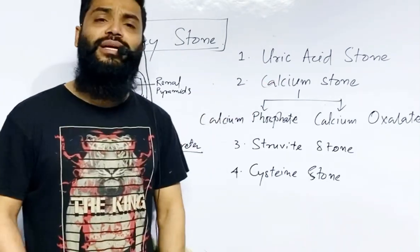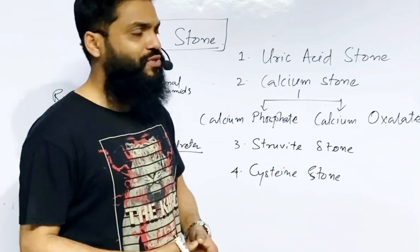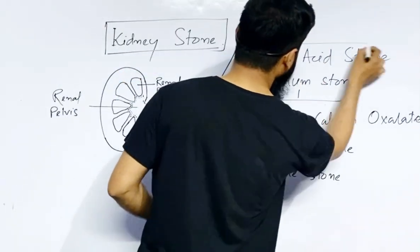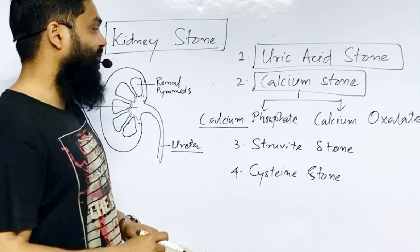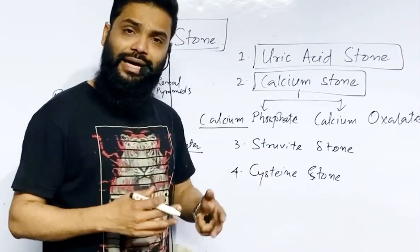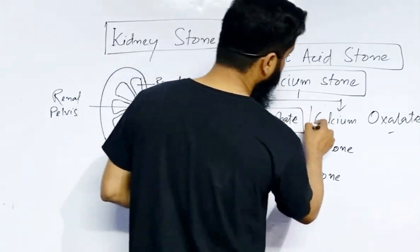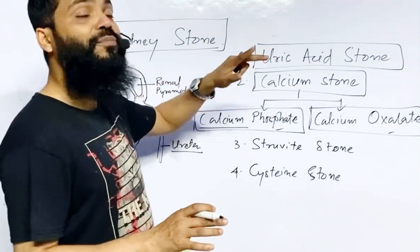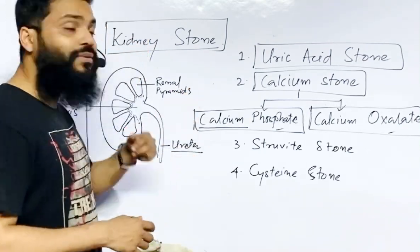Now we'll talk about the calcium stone. The calcium stone is the most common type of stone we can have, and it is formed due to the accumulation of calcium in our body. Calcium stone is formed because of a higher level of calcium in the blood. Two types of calcium stones can be formed: one is calcium phosphate stone, another one is calcium oxalate stone. In both cases, having a high level of calcium in our blood is what leads to stone formation here.